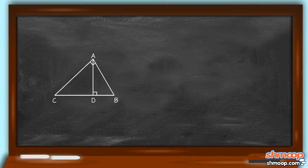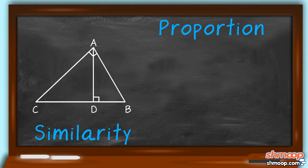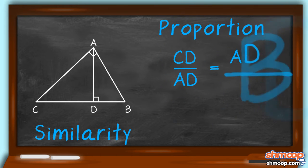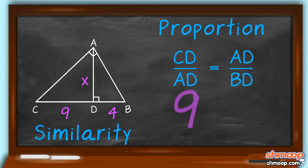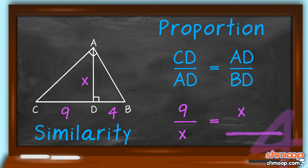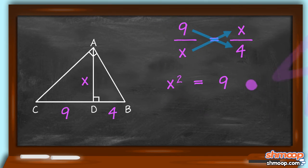First, let's take what we know. We can use the similarity of the two triangles and make a proportion out of the sides. The proportions tell us that CD over AD equals AD over BD. Plugging in these lengths, we get that 9 over X equals X over 4. Cross-multiplying gives us X squared equals 9 times 4.